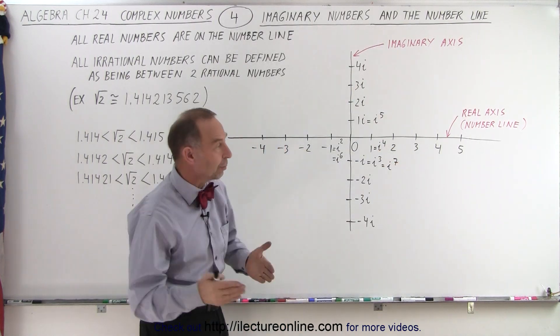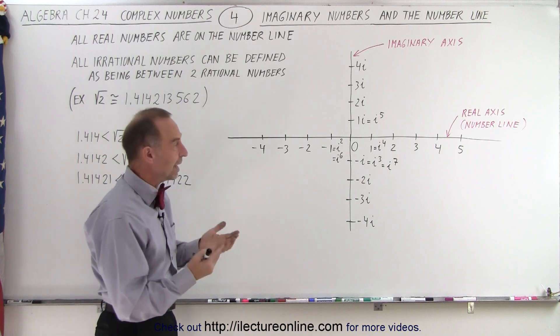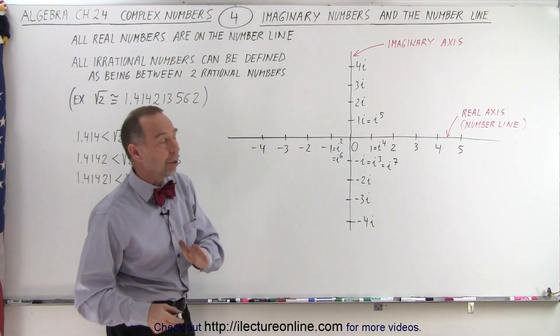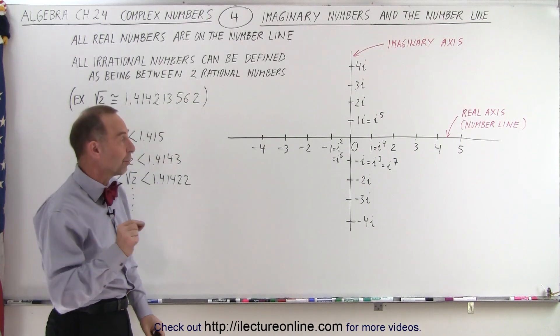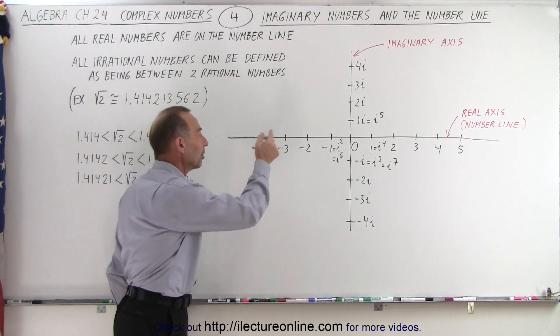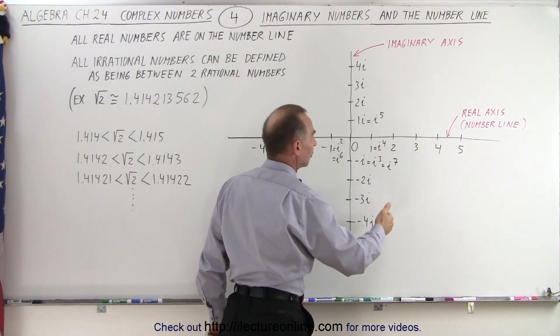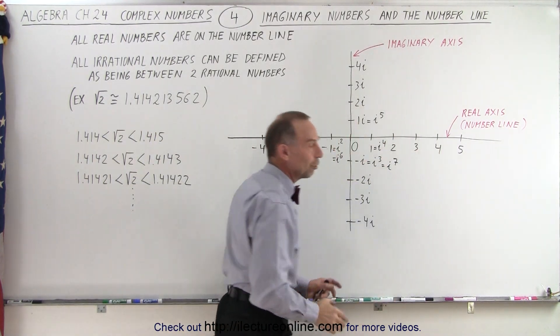Now all real numbers—rational, irrational, integers, you name it—they're all on the number line. Now all the numbers except for the irrational numbers can be placed exactly on the number line. We know exactly where negative 4 is. We know exactly where 2.5 is. We know exactly where 4.25 is and so forth.